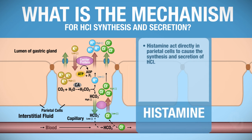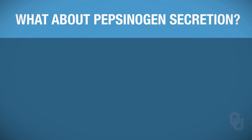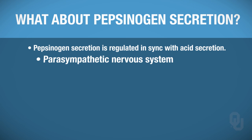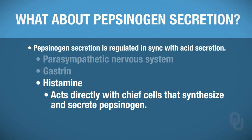What about pepsinogen? We've got to synthesize and secrete pepsinogen as well. We know that the chief cells do that, and it happens right alongside the synthesis and secretion of hydrochloric acid. So the parasympathetic nervous system is involved, gastrin the hormone is involved, and histamine as well. Histamine also acts directly on chief cells, because it's the chief cells that synthesize and secrete pepsinogen.